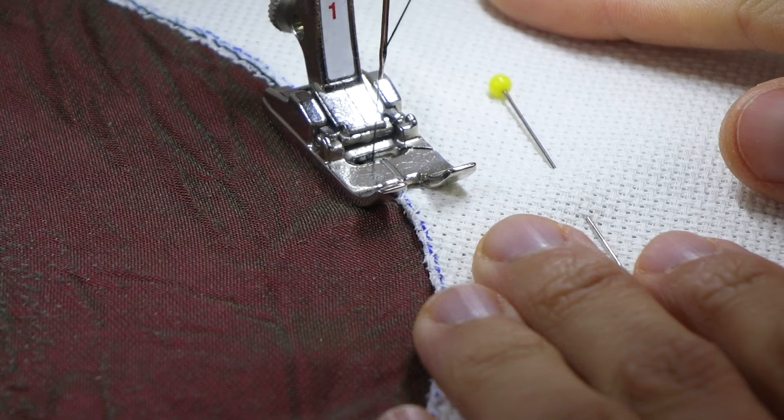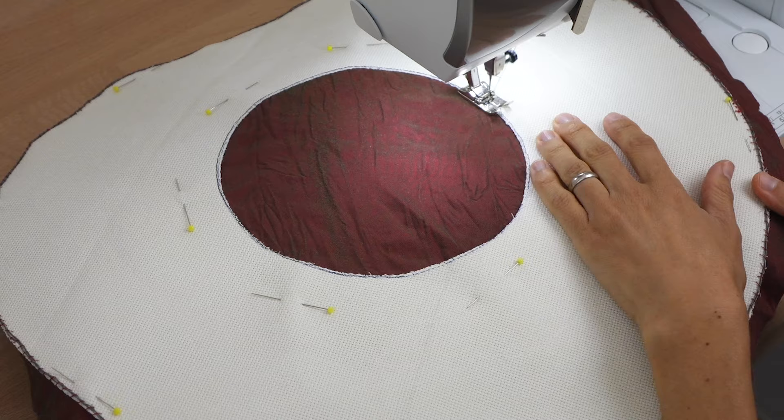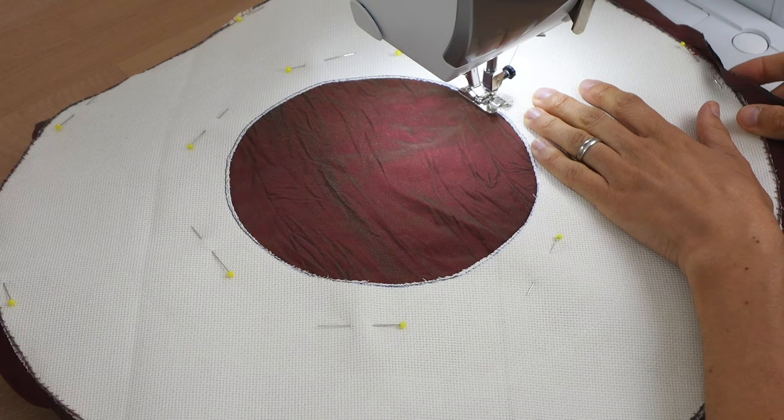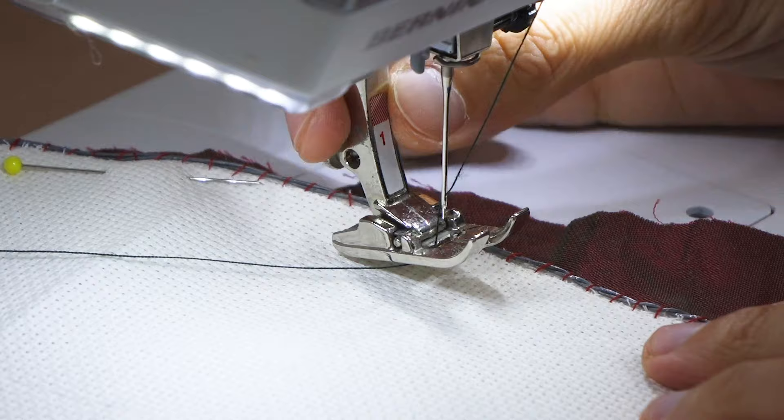We need to sew both layers together with a straight stitch at the sewing machine. At about 1mm from the inner edge and 1mm from the outer edge as well.